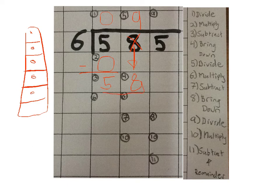58 divided by 6, our next step is we're going to multiply. I'm going to multiply 9 times 6, which is 54. Again, one digit per box.